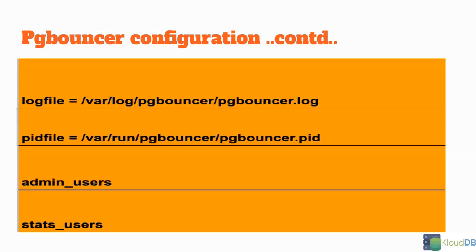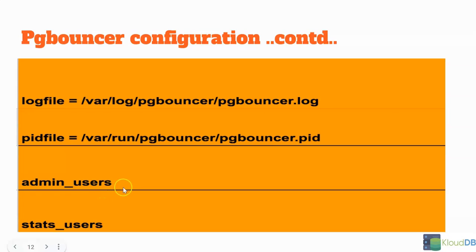Here are more parameters. For the log file — if you have any errors or issues to troubleshoot, the first thing you would look into is pgbouncer.log. This is its default location. Then there is the PID file — this is its default location, but you can change it. You also need one or more admin users to monitor PG Bouncer and do administration tasks, which you specify here. Similarly, for stats users, if you want to let some users gather stats, you can give the list of users here.